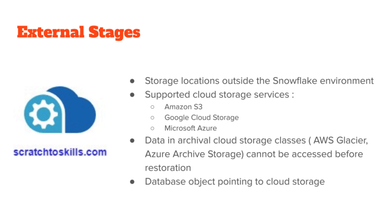You cannot access data held in archival cloud storage classes that require restoration before they can be retrieved. These archival storage classes include, for example, the Amazon S3 Glacier Flexible Retrieval or Glacier Deep Archive Storage class, or Microsoft Azure Archive Storage. A named external stage is a database object created in a schema; this object stores the URL to files in cloud storage.